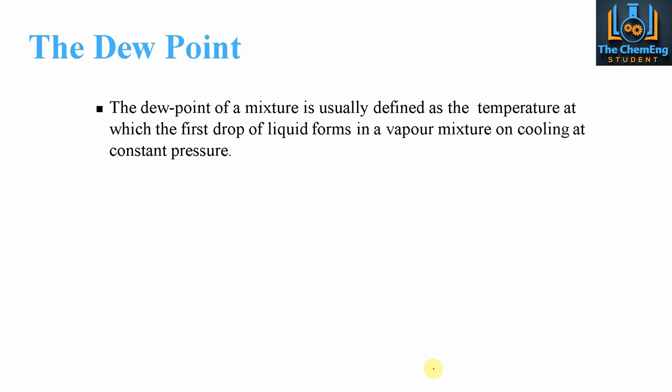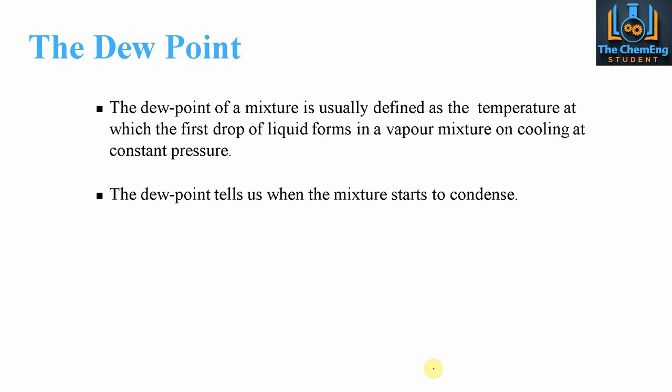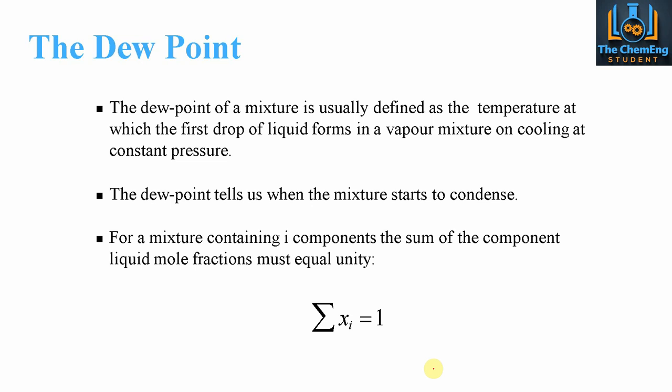The dew point is essentially the opposite of the bubble point. The dew point is defined as the temperature at which the first droplet of liquid will form from saturated vapour, done through cooling at constant pressure. The dew point essentially tells us when our mixture will begin to condense. For a mixture containing I number of components, this time we take the liquid mole fractions as equal to unity — so it's always equal to 1, i.e. 100%.